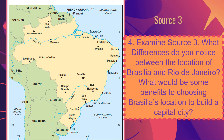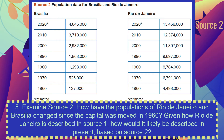Question five asks you to examine source two: how have the populations of Rio de Janeiro and Brasilia changed since the capital was moved in 1960? This is a two-part question — students typically only answer one part, so please answer both. The second part asks: given how Rio de Janeiro is described in source one, how would it likely be described in the present based on source two? You're comparing the two sources. Pause the video and answer that question.